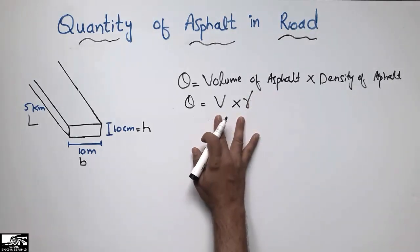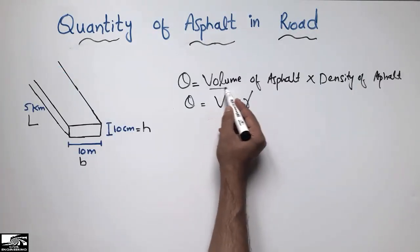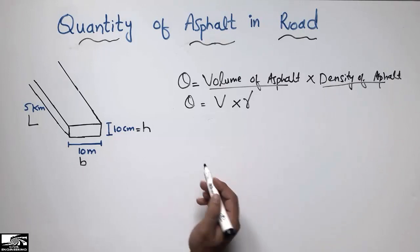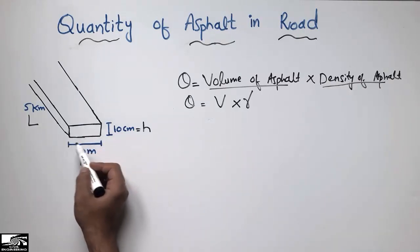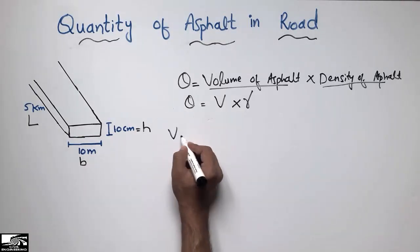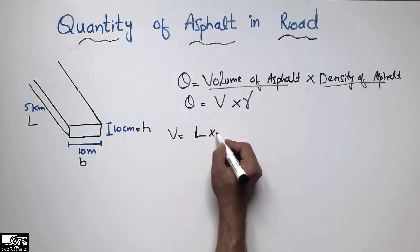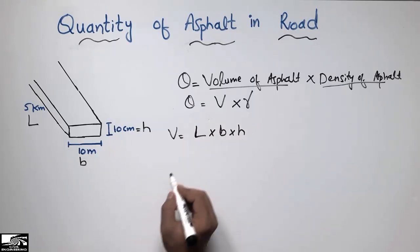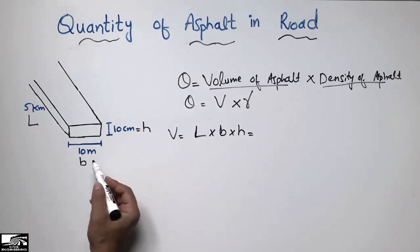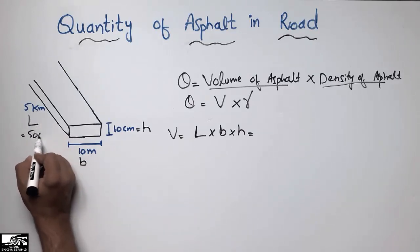First I will find the volume of asphalt, then multiply by the density to get the total quantity. The volume of asphalt is calculated as length × width × height. Our length is 5 kilometers, which I convert to the same unit — meters — giving 5000 meters.